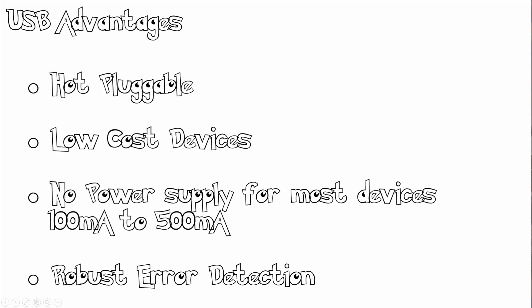Looking at the advantages of USB: USB is hot pluggable, meaning you can plug in your USB device without shutting down or restarting your computer. USB is also low cost, and for most devices you don't need a separate power supply — the current supplied is around 100 mA to 500 mA. There is also robust error detection, and the USB host and hub manage power by enabling and disabling power to individual devices, and can instruct devices to enter a suspend state which reduces maximum power consumption to 500 mA.